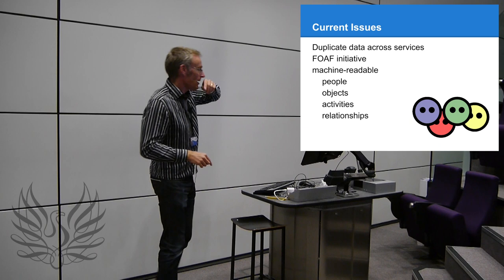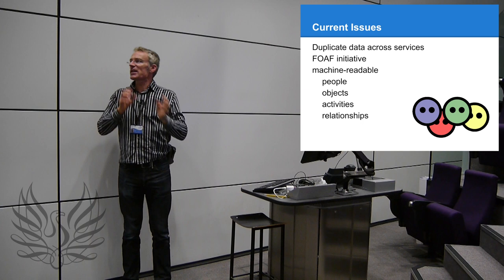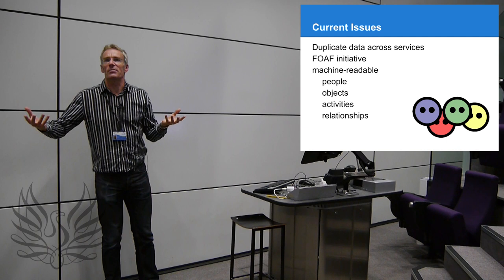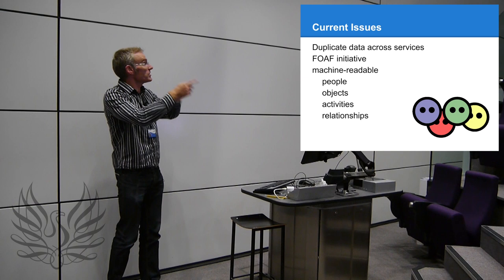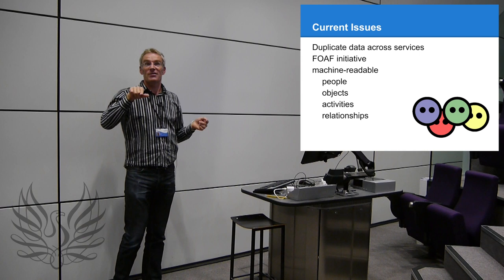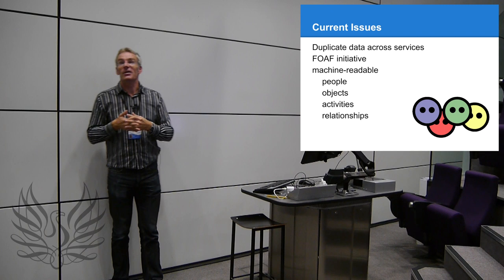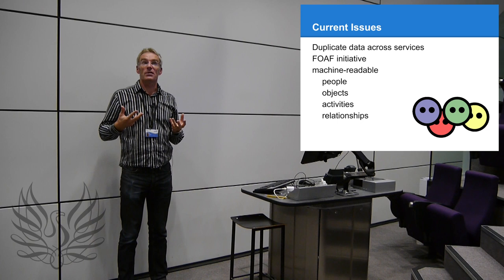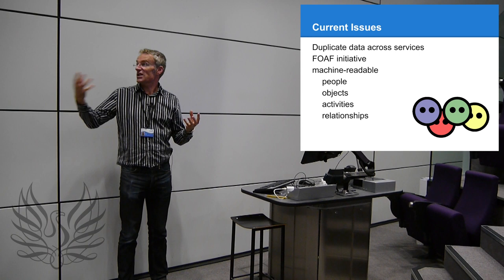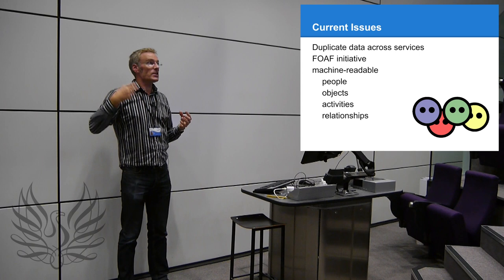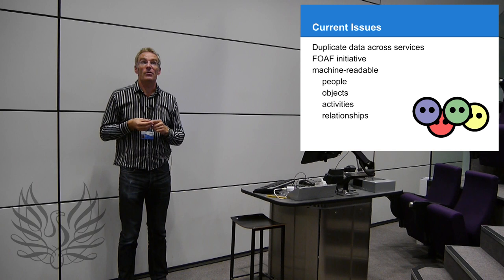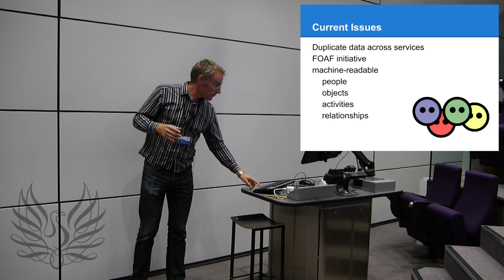An issue with social networking: you've got all these accounts — YouTube, Facebook, Twitter — and every account has a set of data, your friends in one system not in another. You've got these silos of data with no interoperability between them, because it's not in Facebook's interest to allow you to share data with Twitter. There's an initiative called FOAF — Friend of a Friend — trying to turn this data into machine-readable data so one service can read off another, almost like a central login all systems can read. For the latter half of this decade, that's going to be a big challenge.